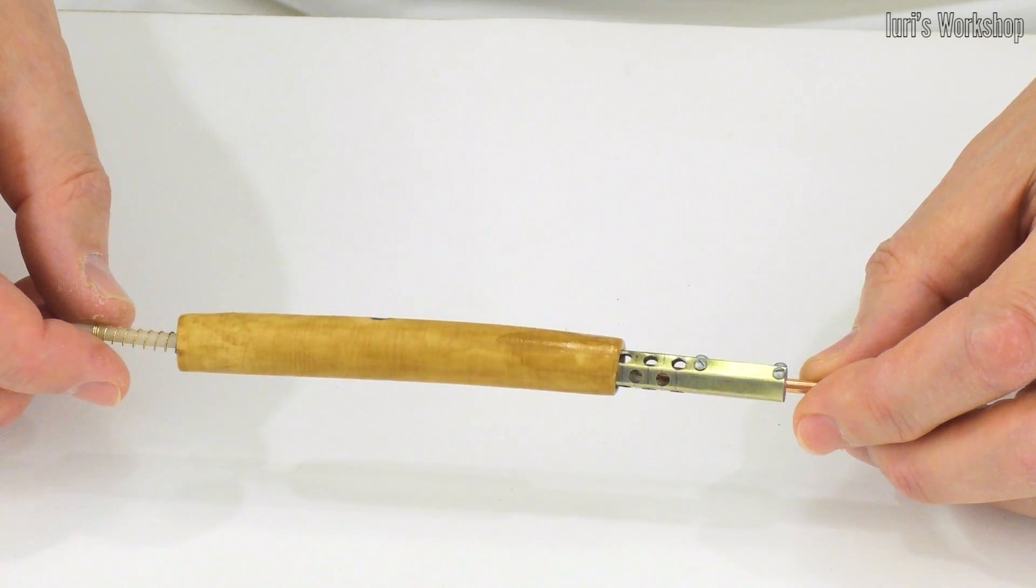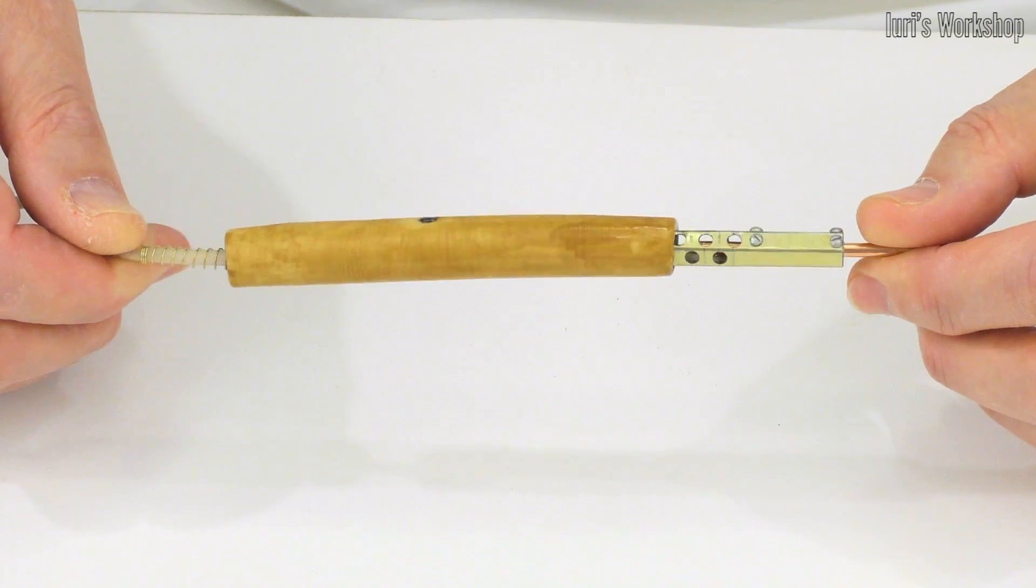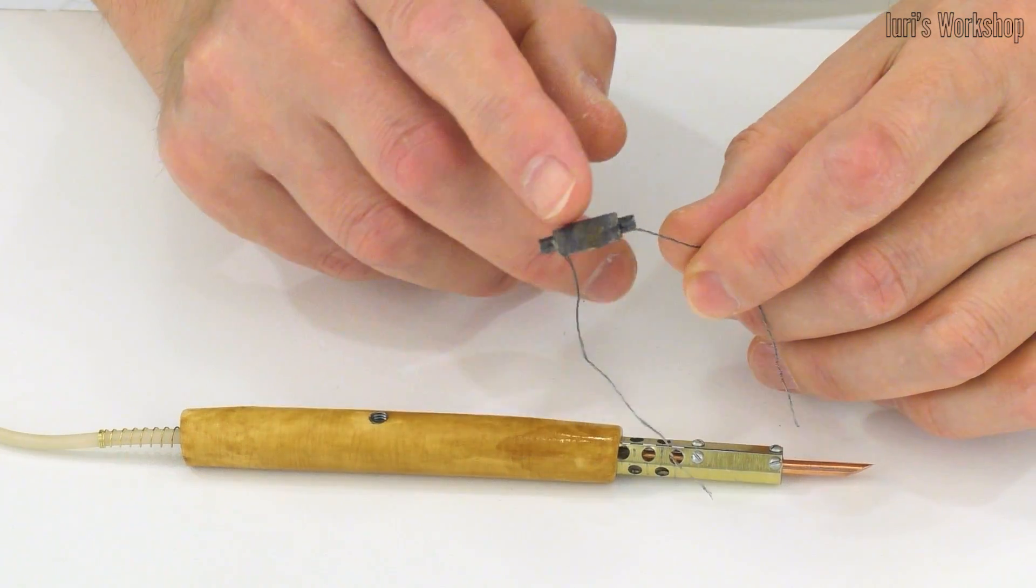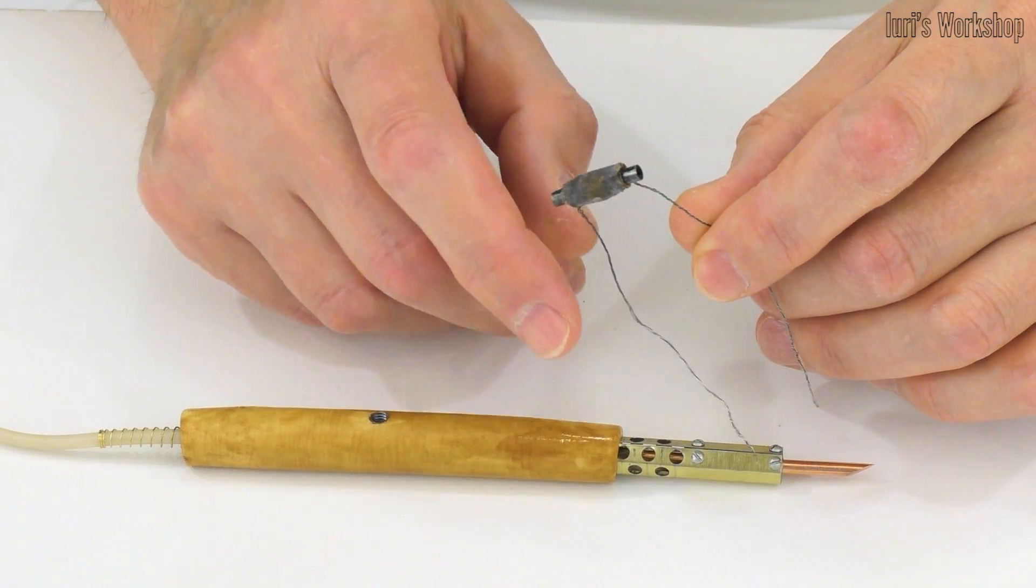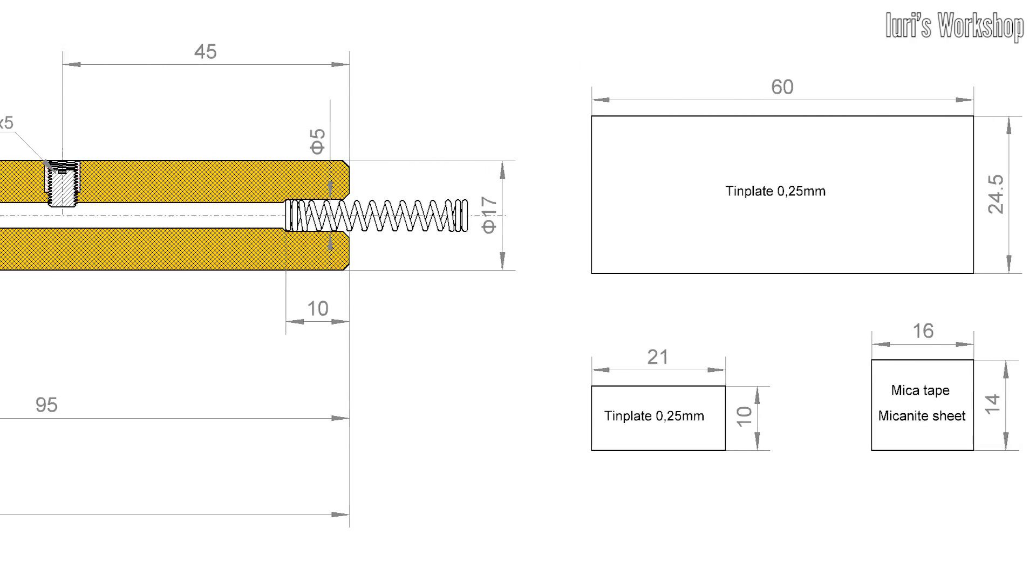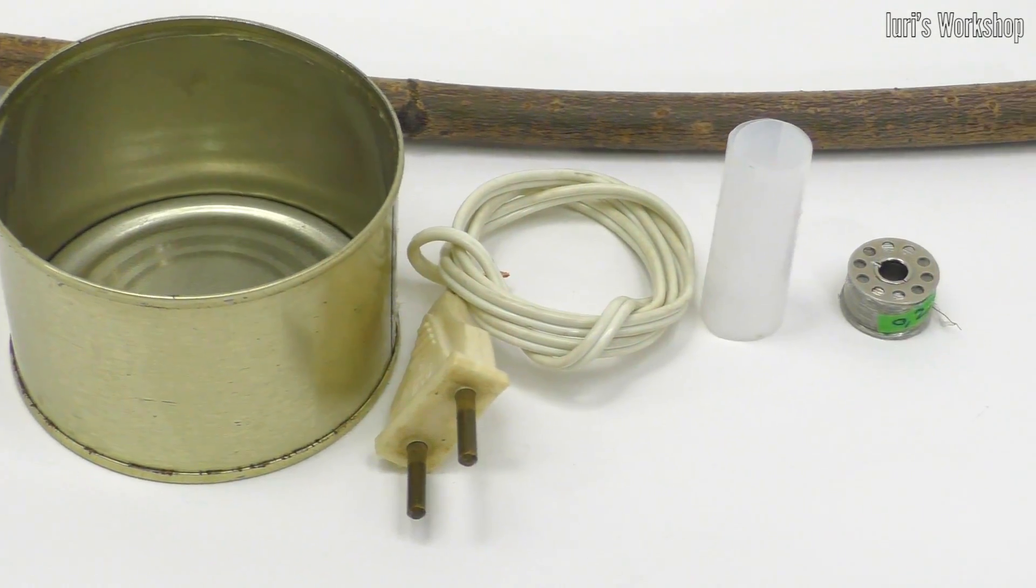Hello friends! Today I present to you a homemade soldering iron assembled according to the classical scheme. Heat-resistant mastic protects the heater of this soldering iron from oxidation and short circuits. You can find more information about the soldering iron in the video description.